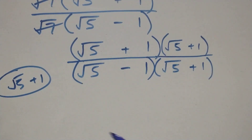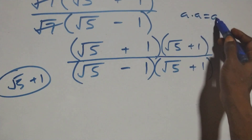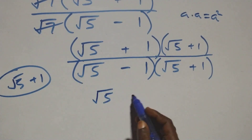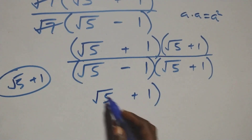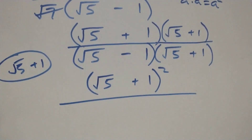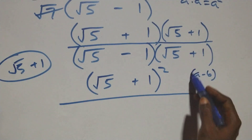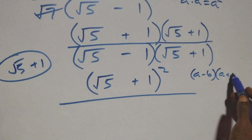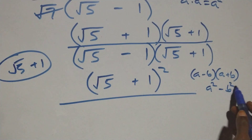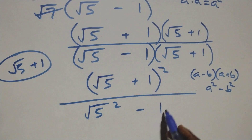In the numerator, we have the same thing in the bracket: a times a, which is simply a squared. So we can write this as (root 5 plus 1) all squared. In the denominator, we have conjugate pairs following the identity (a minus b)(a plus b) equals a squared minus b squared, giving us root 5 squared minus 1 squared.